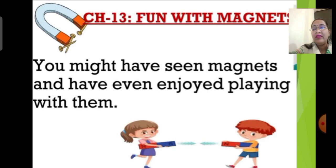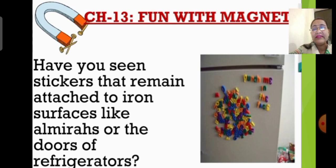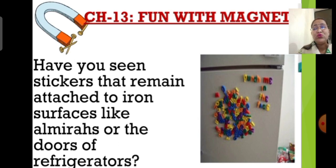You might have played with magnets knowingly or unknowingly. You might have stuck fun magnetic stickers with alphabets, emojis, or images onto iron surfaces like an almirah or the door of a fridge. On the screen I have shown you such magnets — because of their magnetic property they stick to metal or iron surfaces.